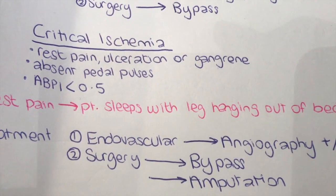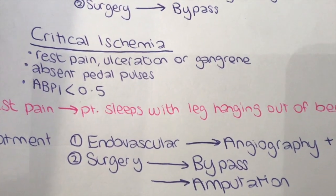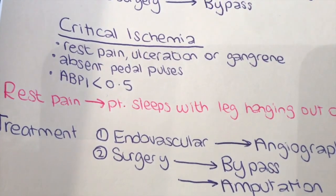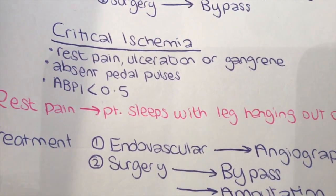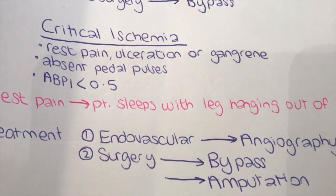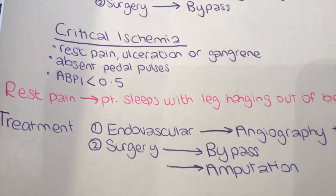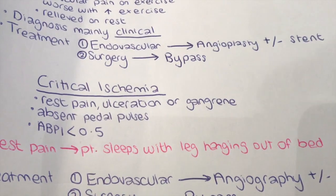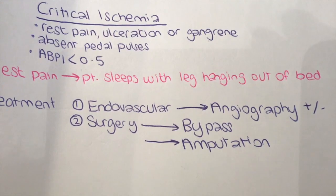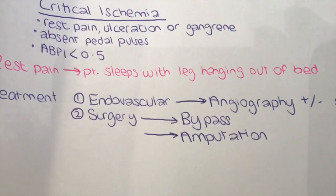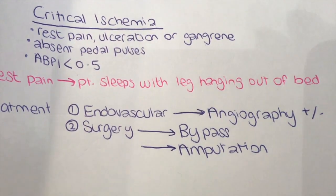Patients hang their leg off the bed to use gravity to get blood flowing to their legs, because at night the claudication typically gets worse. By sleeping with their leg hanging off the bed, their symptoms get better — so alarm bells should ring when you hear this. With critical ischemia, treatment is similar to intermittent claudication, though surgery is more likely given the severity of the disease, and amputations are also a treatment option.